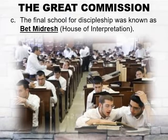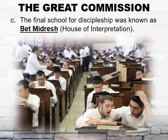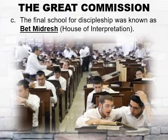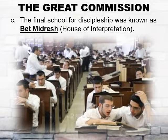The final school for discipleship was known as Bet-Midrash, or the House of Interpretation. In order to be accepted into this level of education, a student would have to approach or be approached by a rabbi. The rabbi would then question the potential pupil to determine if he could be like that rabbi. Those who passed would hear the rabbi say, 'Come, follow me.' But those who failed would hear him say, 'Depart from me to do your family trade.' From the ages of sixteen to thirty, the best of the best would become a disciple of a rabbi, receiving on-the-job training to one day become a rabbi himself and have his own disciples.